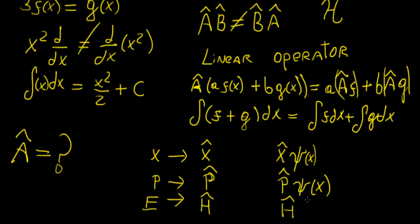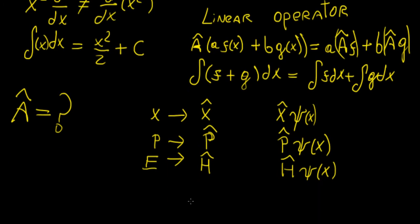If we apply the Hamiltonian operator to the wave function, we should get values for the energies. There is an important property of operators associated with physical observables: any operator corresponding to a physical quantity must be Hermitian. Hermitian means that the operator is equal to its own adjoint, represented by a dagger symbol. If we were dealing with matrices, we would take the transpose of the matrix and then the complex conjugate of each element to get the adjoint. If this operation gives us back the same matrix, then we have a Hermitian operator.